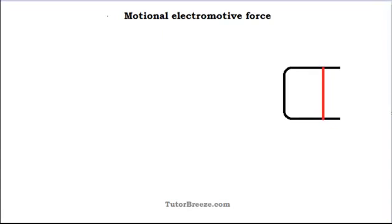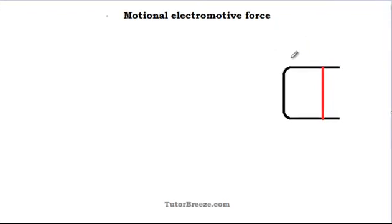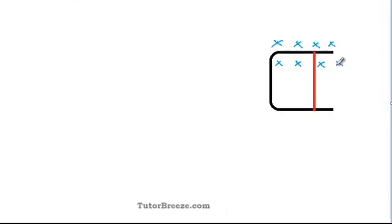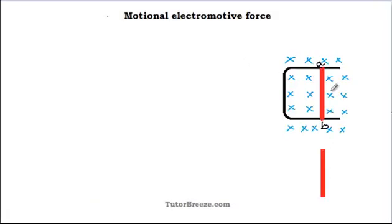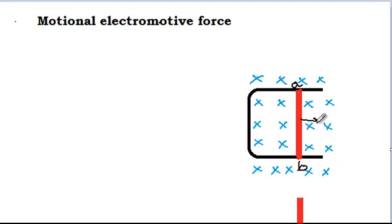In this experiment we have a straight conductor — shown in red — that moves across a U-shaped conductor. A uniform magnetic field is present directed into the plane of the page, represented by crosses. Had it been out of the plane of the page, we would draw dots instead of crosses. Let's say the conductor AB moves to the right in magnetic field B.